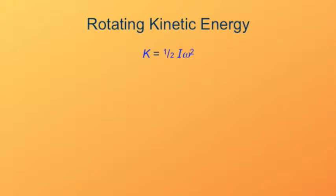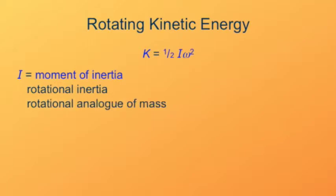We see omega, the angular speed, is analogous to the v speed, and this I then must be the rotational analog of mass. It tells us how inertial the object is. The name we have for this is the moment of inertia, which is basically rotational inertia. It's the rotational analog of mass.